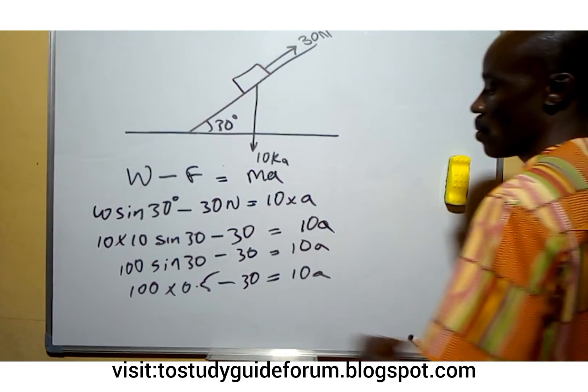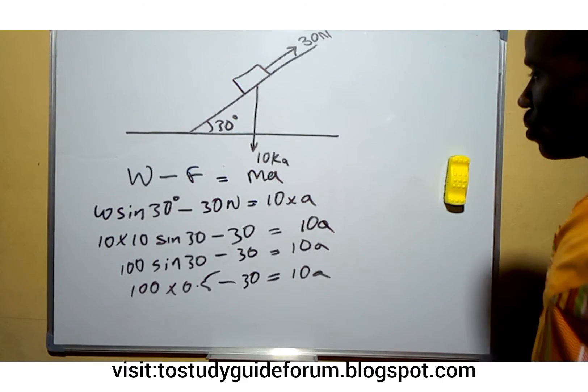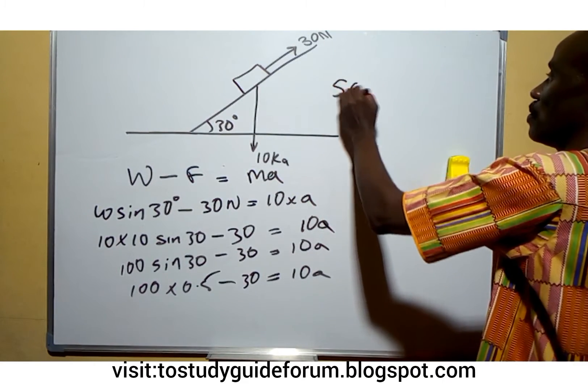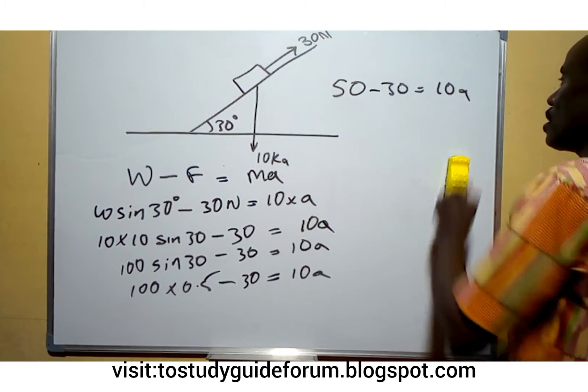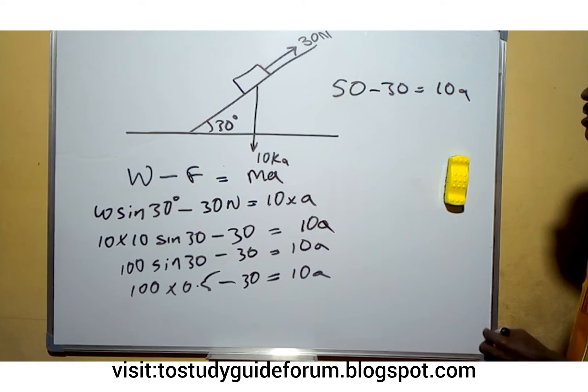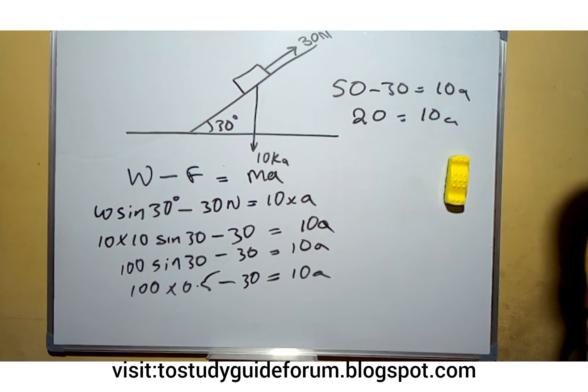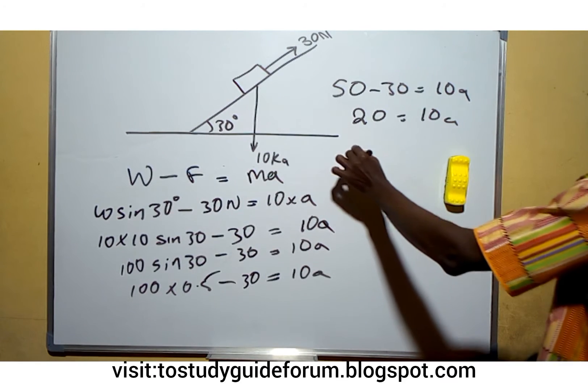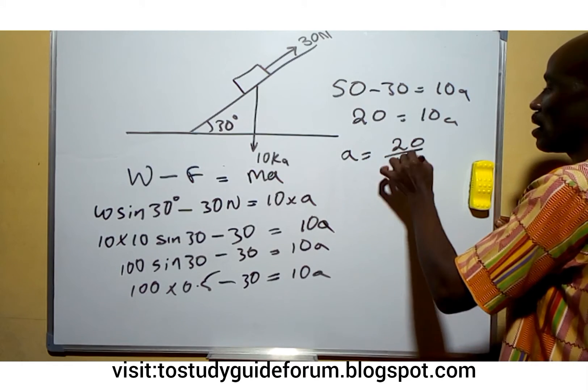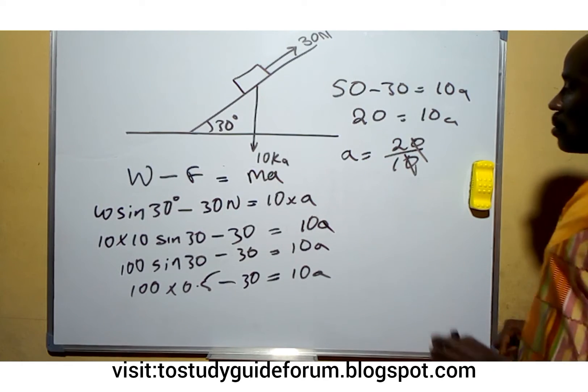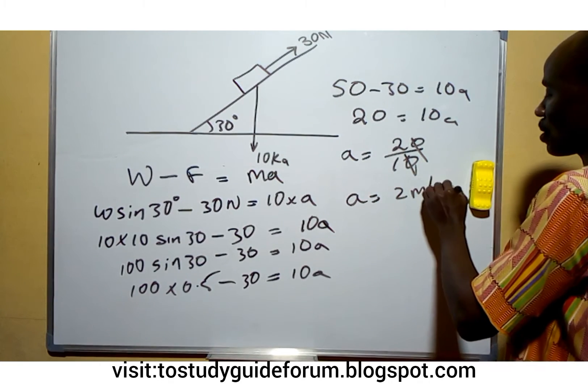0.5 multiplied by 100 will give 50. 50 minus 30 equals 10a. So 50 minus 30 will give us 20 equals 10a. So the acceleration that we are looking for will be 20 over 10, that will give us 2 meters per second squared.